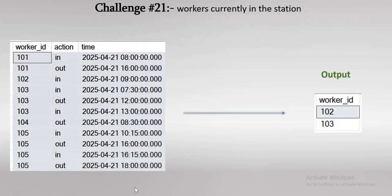As per this problem statement, we have to find the total number of workers who are currently inside this workstation. So for 21st of April 2025, this is the information given about each worker — their action and their log time. Using this data, what we found is worker ID 102 and 103 are currently in the workstation.